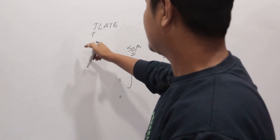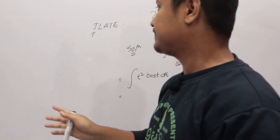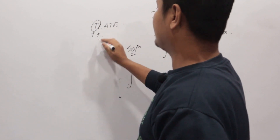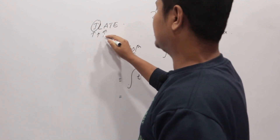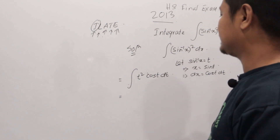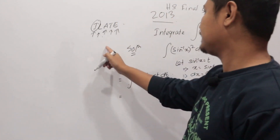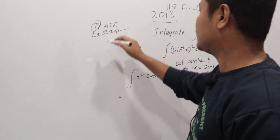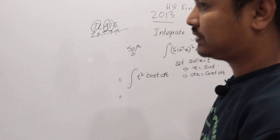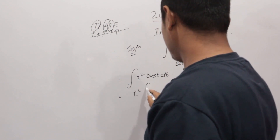According to the ILATE rule, the first function is decided as follows: I stands for inverse function, L stands for logarithmic function, A stands for algebraic function, T stands for trigonometric function, and E stands for exponential function. Here t² is algebraic and cos(t) is trigonometric, so by ILATE, t² is the first function.